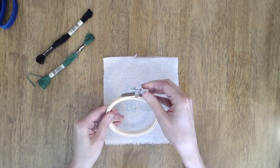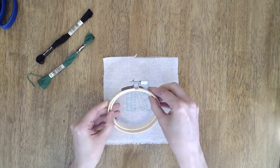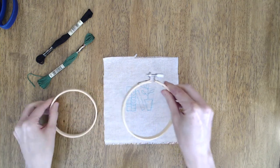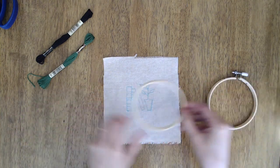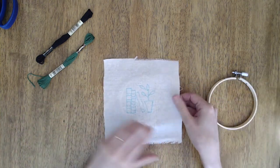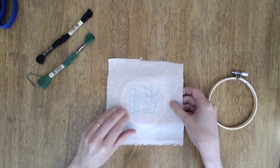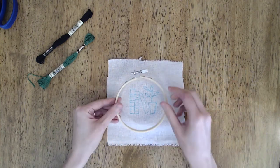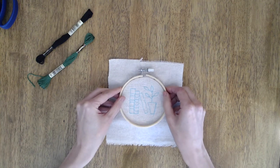Okay, the first step is to mount your fabric in the hoop. So you'll loosen the screw to separate the rings of the hoop, then take the smaller ring and place it under the fabric. Place the outer ring on top and press them together.